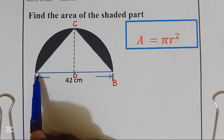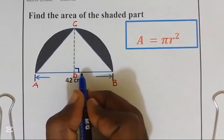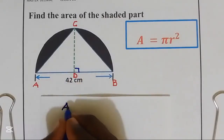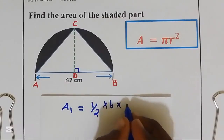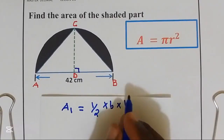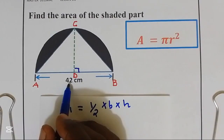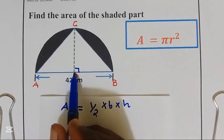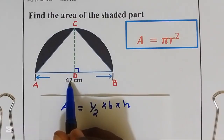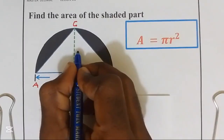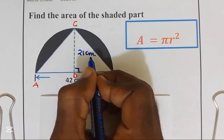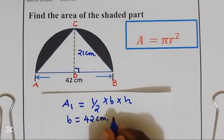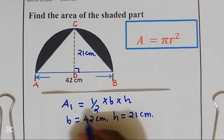Now let's find the area of triangle ACB. This is a right-angled triangle. The area of a triangle is given by a half multiplied by base multiplied by height. When we check our triangle, we have the base AB which is equal to 42. They don't give us the height, but we can easily get it because the height is the same as the radius of the semicircle, which we already found to be 21. So the height is equal to 21 cm.